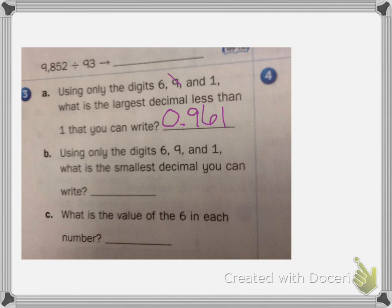Now it says using only the digits 6, 9, and 1, what's the smallest number you could write? So again, we want a 0 and then a decimal point, and now we want to do the opposite. We want our smallest, and then our next smallest, and then our next smallest. So 0 and 169 thousandths. Then it says what is the value of the 6 in each number? For each of them, it is 6 hundredths. So you could write it like that, or you could write it in words if you would like.